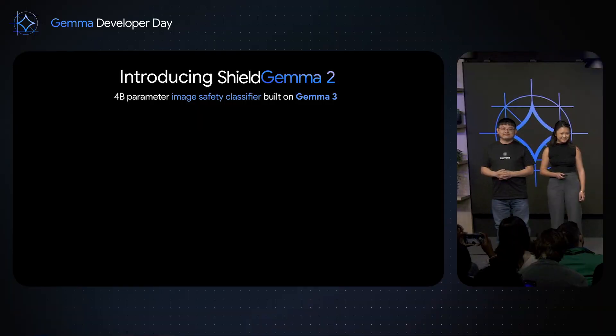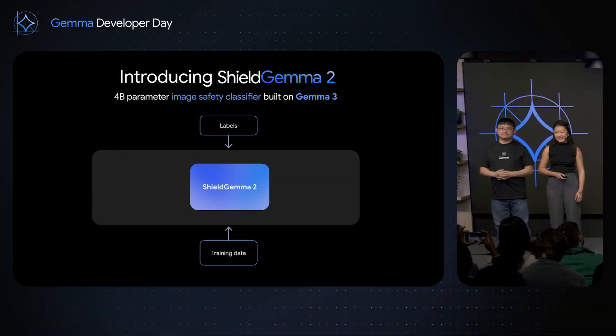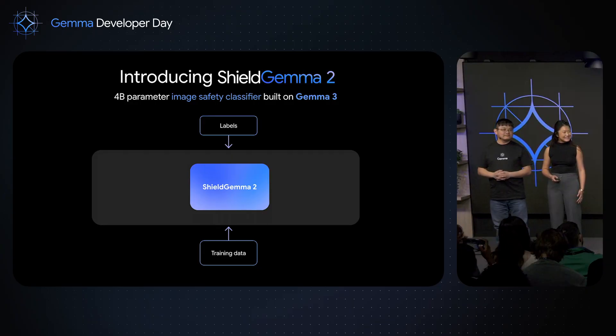We're thrilled to announce Shield Gemma 2, a four billion parameter image safety classifier built on the strength and flexibility of Gemma 3. Let's dive into a little bit about how we built it, how it works, and who it can be used for.